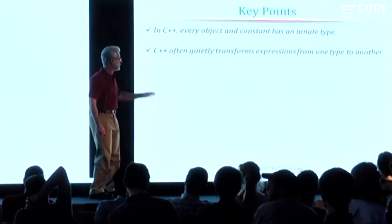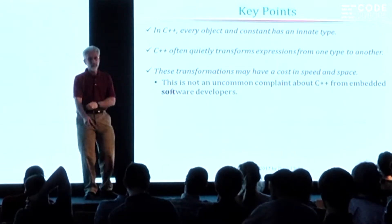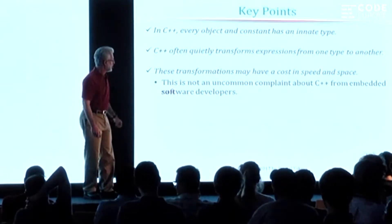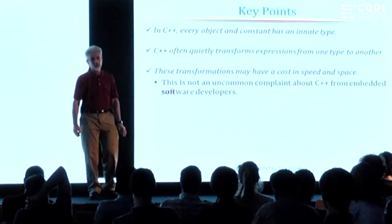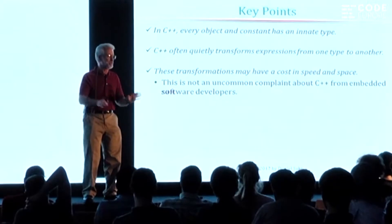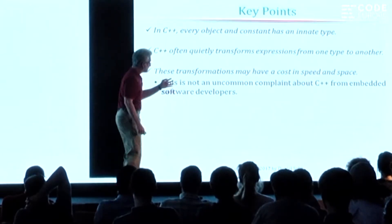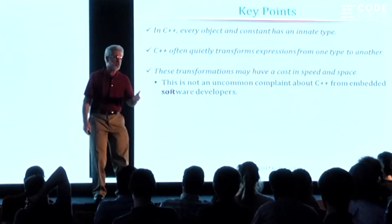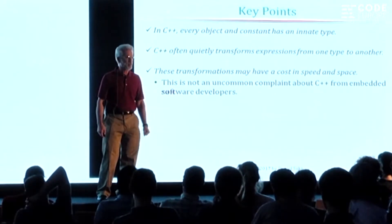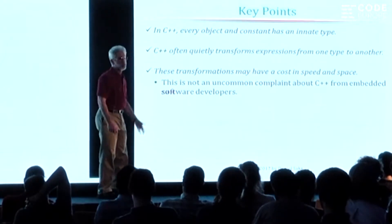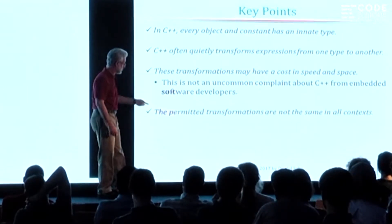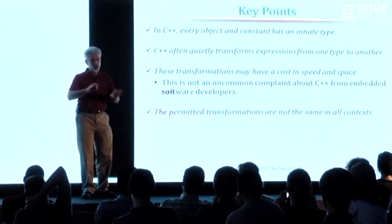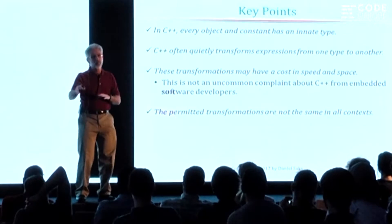C++ often quietly transforms things from one type to another. And these transformations may have a runtime cost both in the size of the code and the execution time. In my experience working with people who do embedded development — people who have rigid requirements for speed and space consumption — I hear this complaint: the compiler is doing too much magic, transforming things from one type to another, and it's injecting cost into my program that surprised me. So one of the reasons you want to learn about this is to take away the surprises, to be able to predict when this happens and control it.